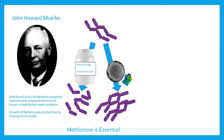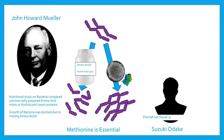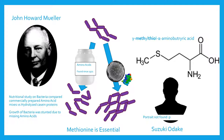The chemical formula wasn't discovered until 1924 by a Japanese researcher named Suzuki Odake. He published the correct formula and chemical name: gamma-methyl-thio-alpha-aminobutyric acid. Methionine was therefore the shortening of this name, with the added '-ine' at the end.